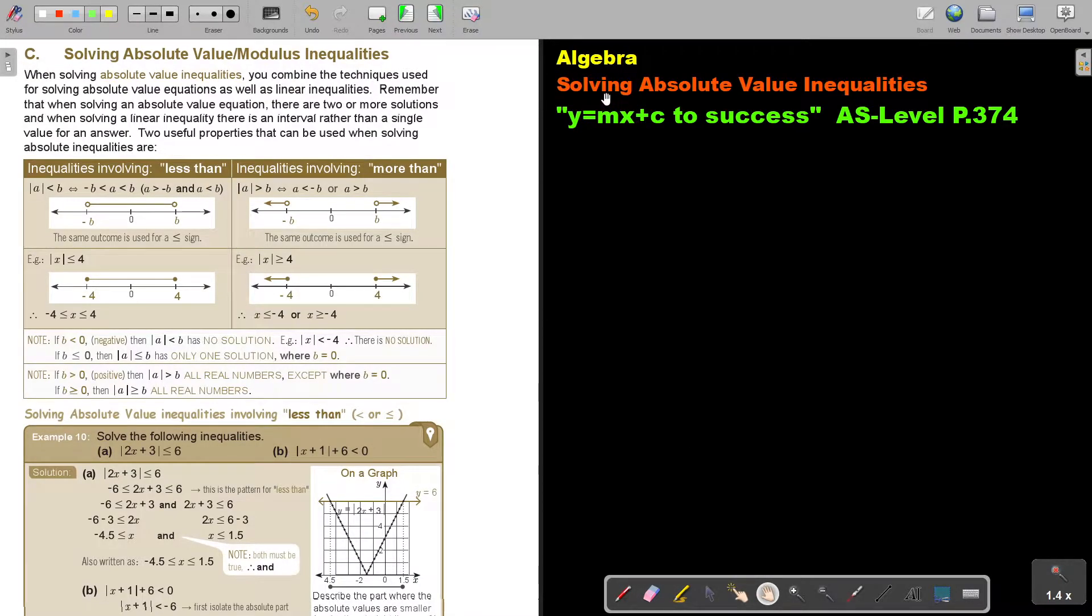In this video we will look at solving absolute value inequalities. You will find this on page 374 in the Namibia AS level mathematics textbook y equals mx plus c to success.